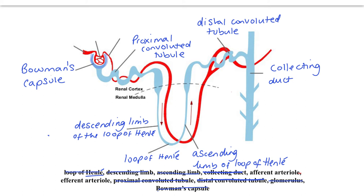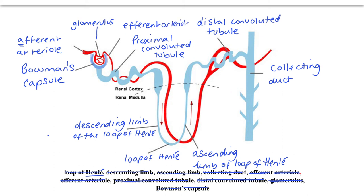Now for the blood vessels associated with the nephron: the blood vessel coming in at the Bowman's capsule is called the afferent arteriole - afferent means coming in. The afferent arteriole splits up into a big ball of capillaries called the glomerulus, and then that goes back into the efferent arteriole. Those are really the only names of blood vessels you need to know, plus the understanding that all the other blood vessels you can see are capillaries that wrap themselves around the nephron.